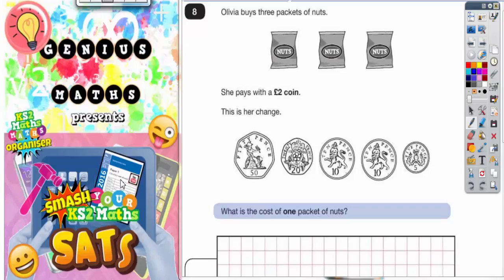Olivia buys three packets of nuts. She pays with a two pound coin. This is her change. What is the cost of one packet of nuts? Well, the first thing we should do is add up her change.